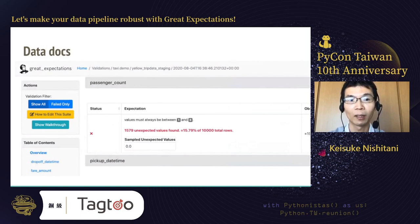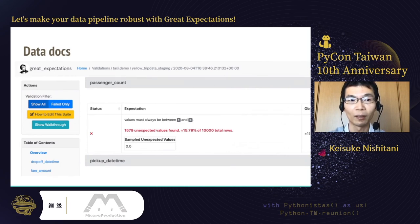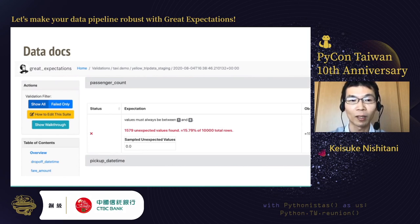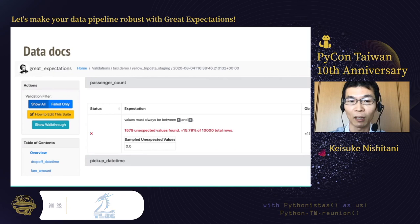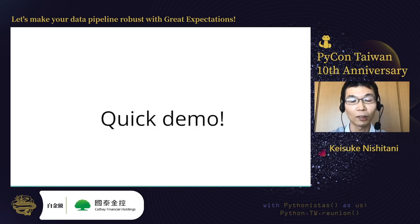Once we define expectations, we can validate data using them. After that, you'll want to see the result of the validation, and you can do so in Data Docs — the third key feature. This page shows the result of the validation against the passenger count column. For example, you can see an expectation was failed: the definition was that values must be between one and six in the passenger count column, but the expectation failed because there were unexpected values of zero.